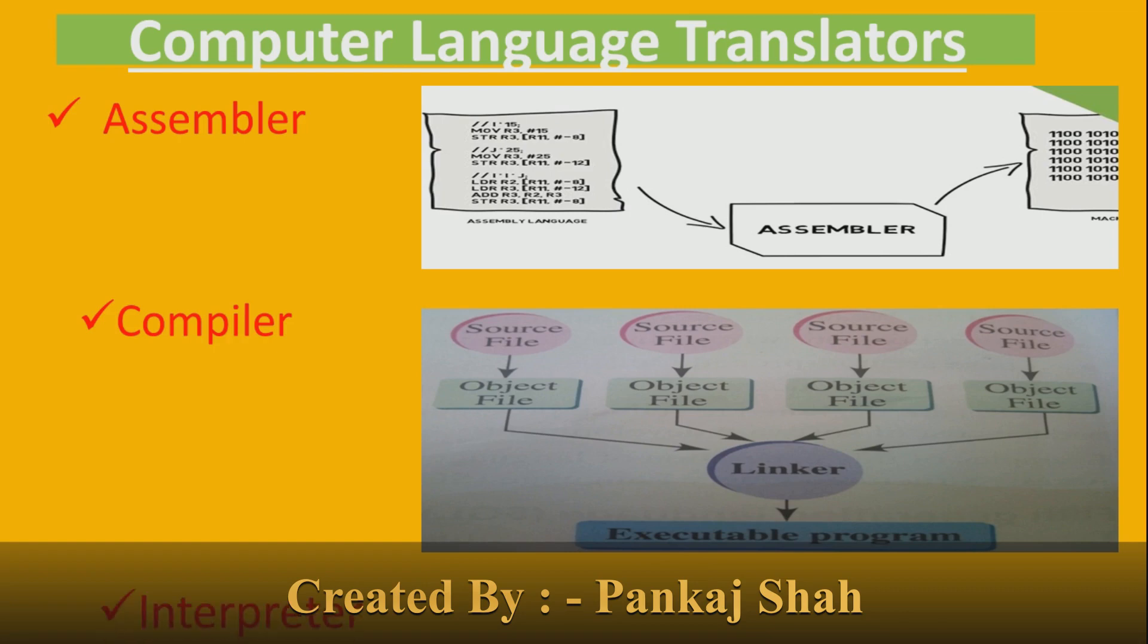Interpreter: An interpreter is a program that translates the source code into intermediate code and immediately executes it line by line. The disadvantage of an interpreter is that it has no memory to store the translated lines.